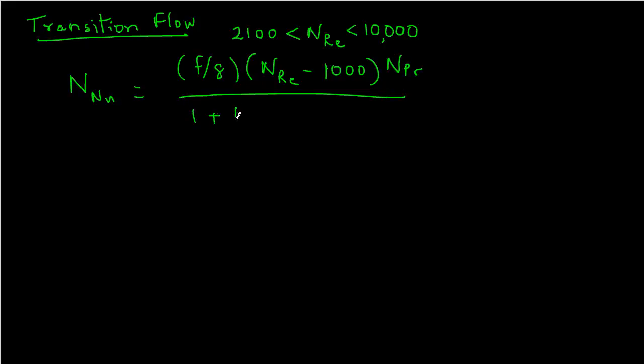In the denominator, 1 plus 12.7 × (F/8) raised to power 1/2, times Prandtl number raised to power 2/3, minus 1.